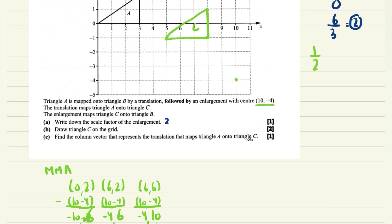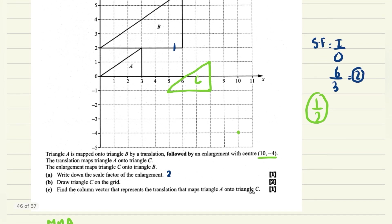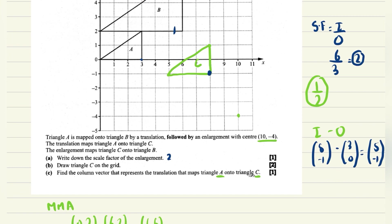So if the object to image scale factor is 2, then image to object is 1/2. Now I need to find the translation vector from A to C, meaning C is the image and A is the object. Taking the same corresponding point: (8,-1) minus (3,0) gives the translation vector of (5,-1). That's the answer.